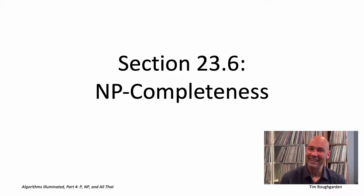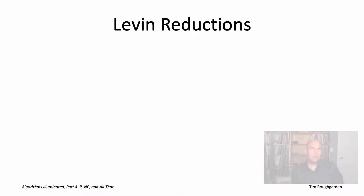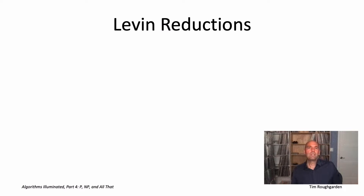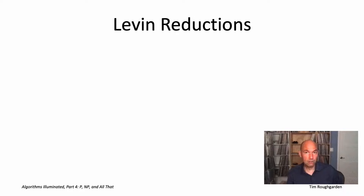Sound pretty amazing? Well, it is. Now let's learn about it. What do we mean when we say that one problem A is a thinly disguised version of another problem B? We can make that idea mathematical through the use of Levin reductions.